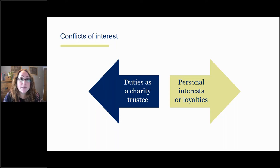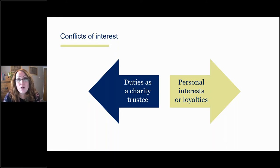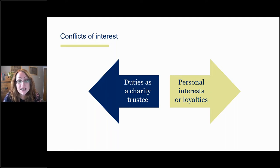Another example is where you are a trustee of more than one charity operating in a similar area, and perhaps those charities are looking at collaborating. It might be that the collaboration doesn't confer any particular benefit on you or any person connected with you, but you still have a loyalty to both charities and a duty to act in each charity's best interests. So there could be a conflict of loyalty in a decision around particular arrangements to do with that collaboration. The Commission goes very far with what it defines as a conflict of loyalty, and CC29 states that a conflict of loyalty could also arise where the religious, political or personal views of a trustee could interfere with the ability of the trustee to decide the issue only in the best interests of the charity.